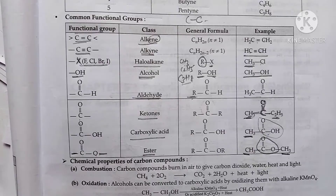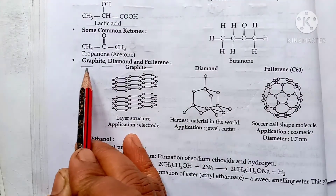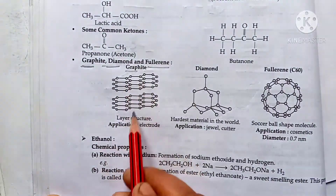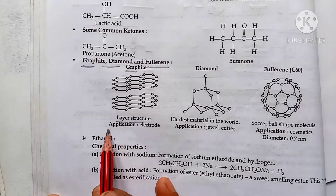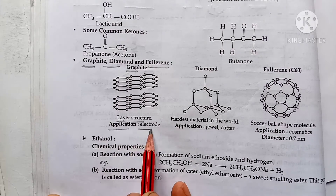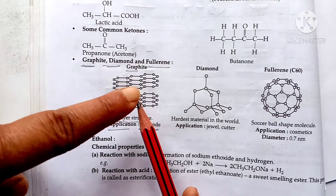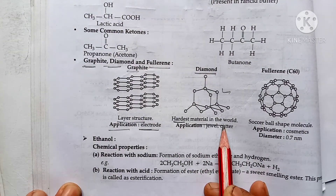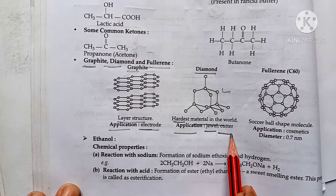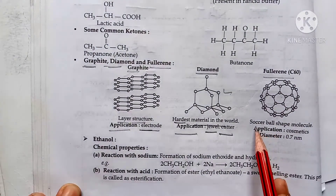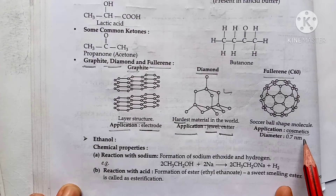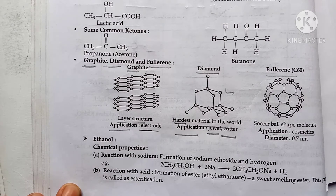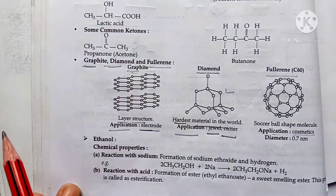So those are the main functional groups. Now let's talk about allotropic forms of carbon. Carbon exists in allotropic forms, the most well-known being diamond and graphite, as well as fullerenes. Graphite has a layered structure and is used as an electrode material and in lead pencils. Diamond is the hardest known material, used in jewelry and cutting tools, and is also used in cosmetics. Allotropy is the property by which an element can exist in more than one physical form.